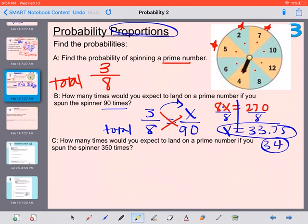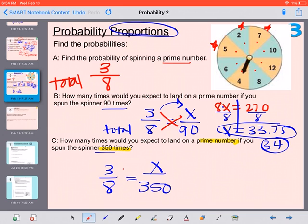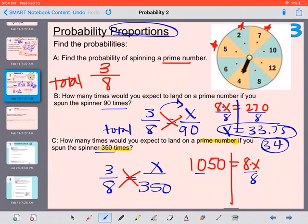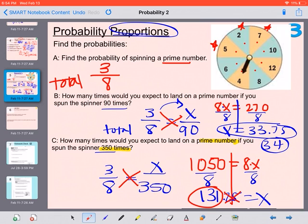Next, it says, how many times would you expect to land on a prime number if you spun the spinner 350 times? The probability is still 3 out of 8, but now we're spinning the spinner a total of 350. We would cross multiply again. 3 times 350, 350 times 3 in my calculator is 1050. And 8 times X is 8X. If I divide by 8, 1050 divided by 8 is 131.25. Again, we can't have a partial spin and this number is less than 5, so we would have an answer of 131 times.